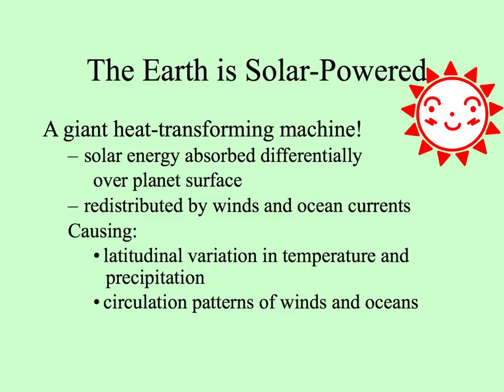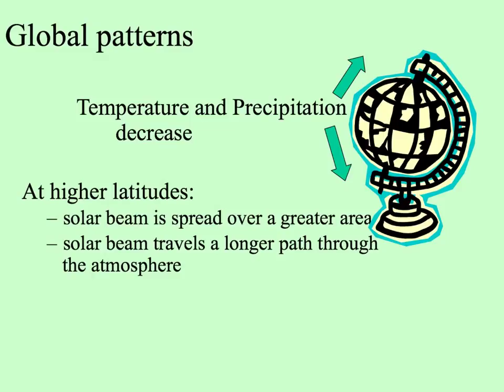I think of the Earth as a giant heat-transforming machine, because it's solar powered. Solar energy hits the surface of the Earth differently in different places and is absorbed differently, then redistributed by winds and ocean currents. These things all cause latitudinal variation in the circulation patterns of the winds and oceans. In general, as you go towards the poles from the equator, both temperature and rainfall decrease.